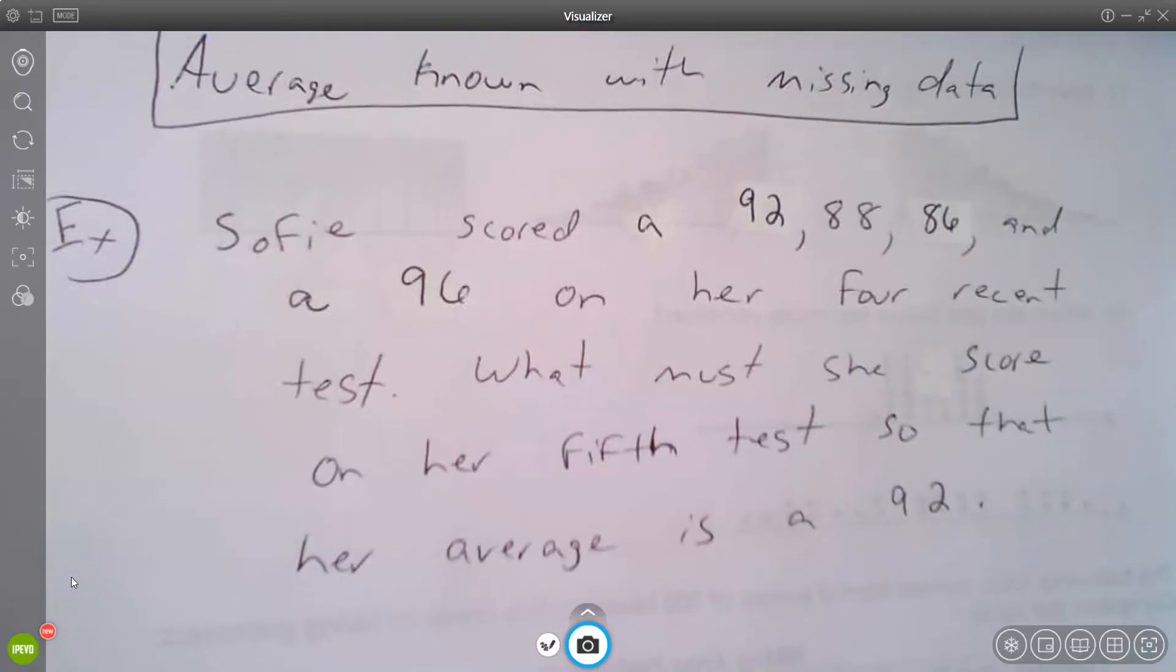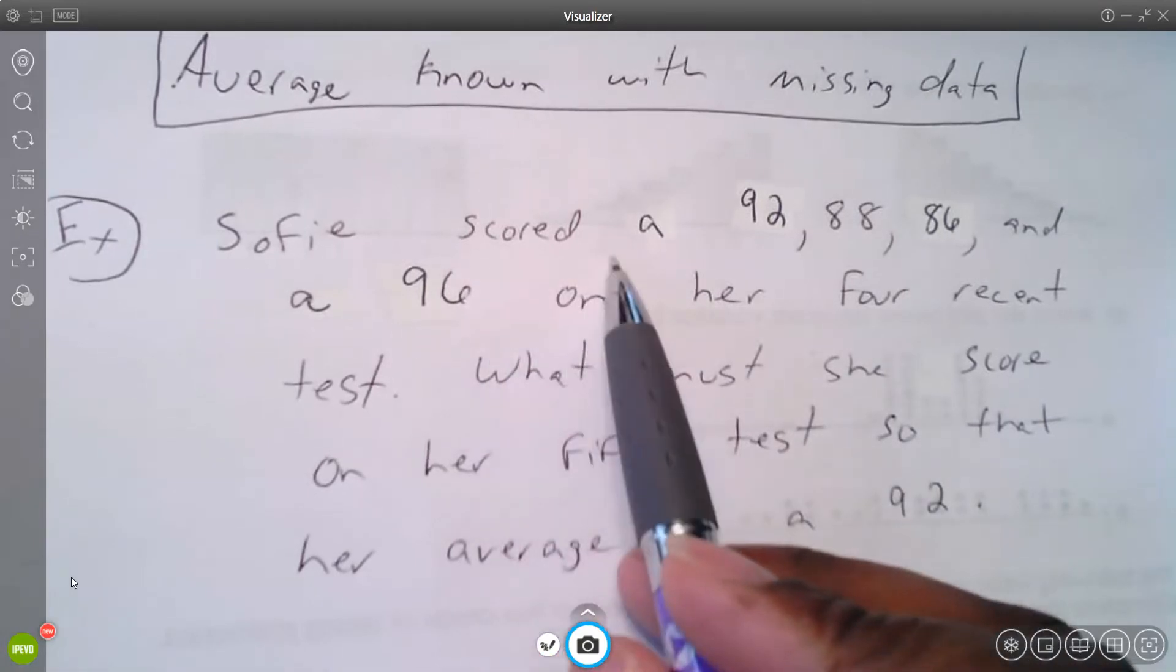Okay, so this video is about finding a missing data point if I know a lot about the data set, like if I know the average and multiple parts within that set. For example, it says Sophie scored...